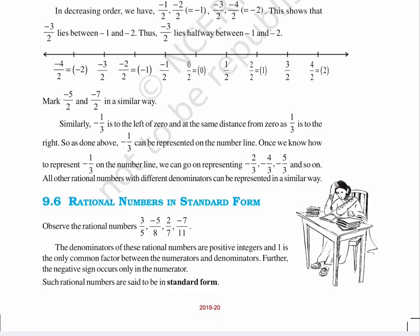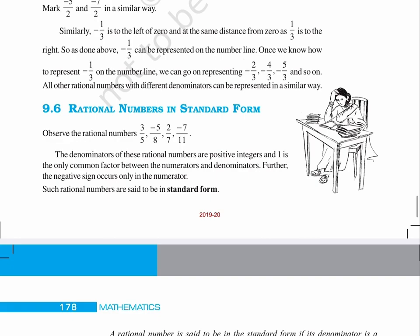All other rational numbers with different denominators can be represented in a similar way. Section 9.6: Rational Numbers in Standard Form. Observe the rational numbers 3 upon 5, minus 5 upon 8, 2 upon 7, minus 7 upon 11. The denominators of these rational numbers are positive integers and 1 is the only common factor between the numerators and denominators. Further, the negative sign occurs only in the numerator. Such rational numbers are said to be in standard form.